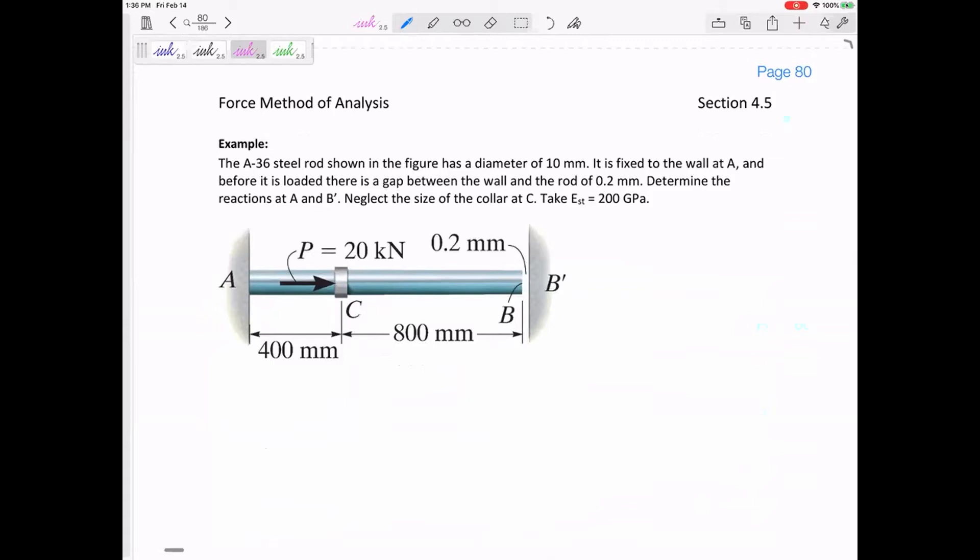So now, what I would do for this problem, I would say the delta L of section AC plus the delta L of section BC adds up to 0.2. One of them might stretch a little bit, one of them might stretch or compress, but the total delta L of AC plus BC adds up to 0.2.